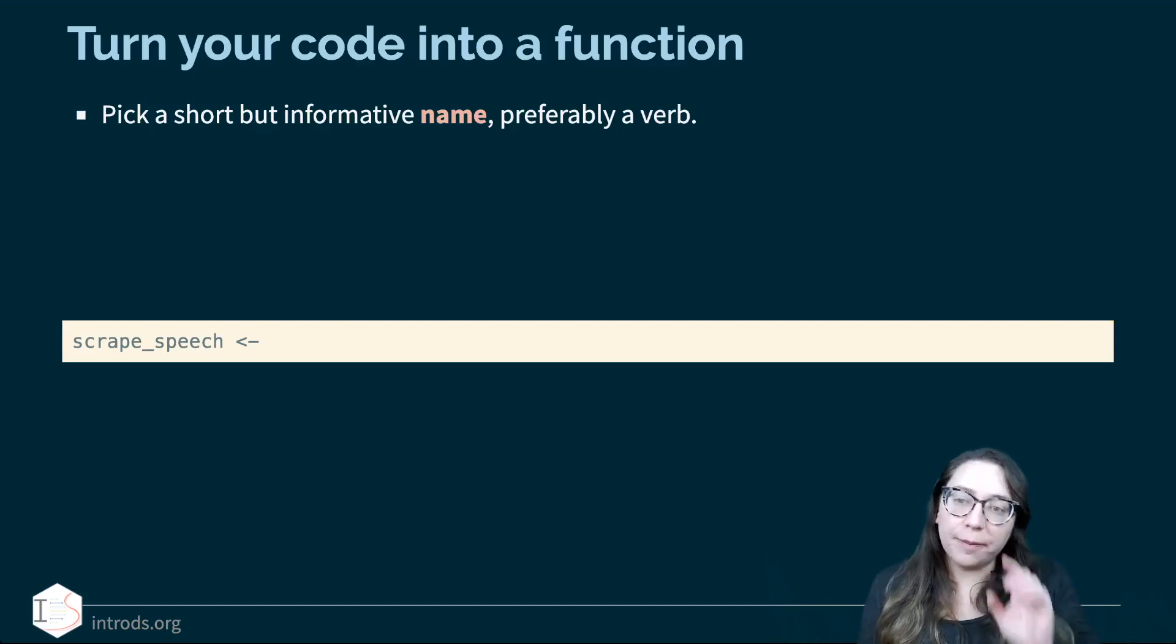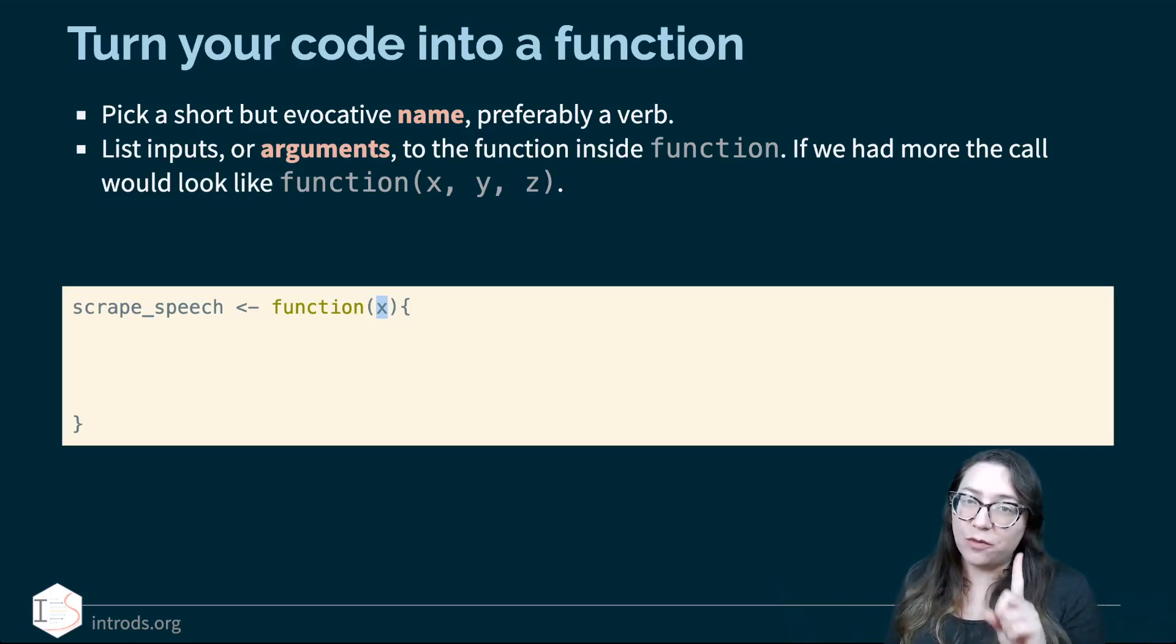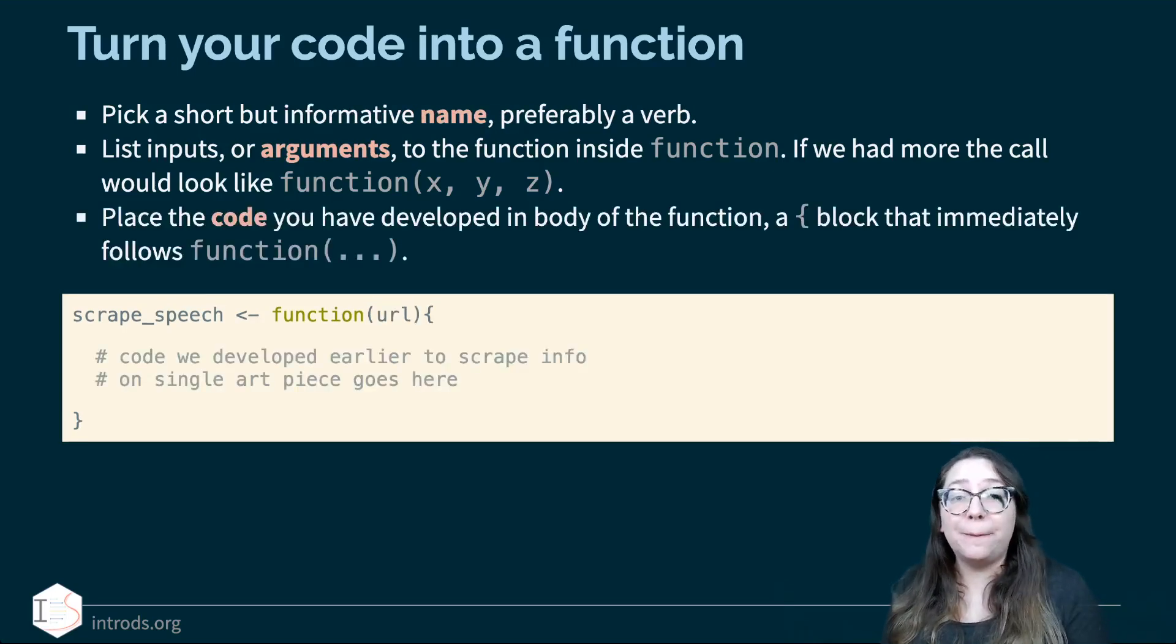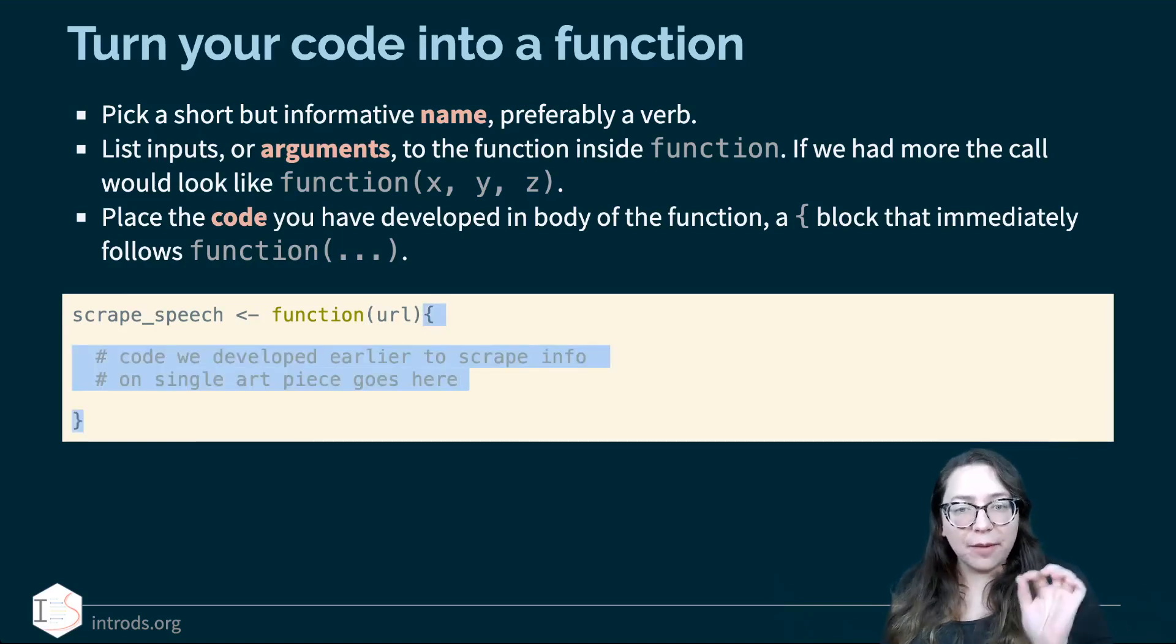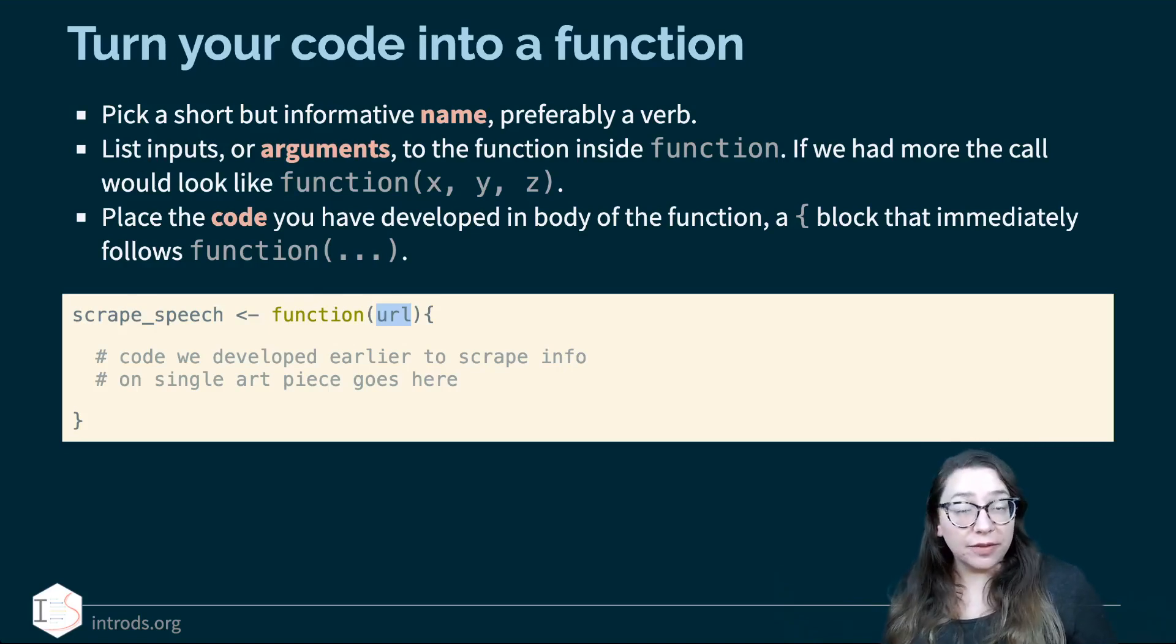So how do we turn our code into a function? You start by picking a short but informative name, preferably a verb. So I'm going to use scrape_speech. Then you list your inputs or your arguments to the function. So we use basically a call called function and then immediately following that in parentheses are the names of the arguments. So generically I might call it an x. We only have one argument that we're going to use for our function and then after that comes the curly braces. If I had multiple arguments for my function it would look something like x comma y comma z. Then we place the code we develop in the body of the function which is basically surrounded by the curly braces and that block has to follow immediately right after the close parentheses for function. And what I've also done here is I've renamed my argument to be URL just to give it an informative name. That's basically what the argument I need for the scrape_speech function.